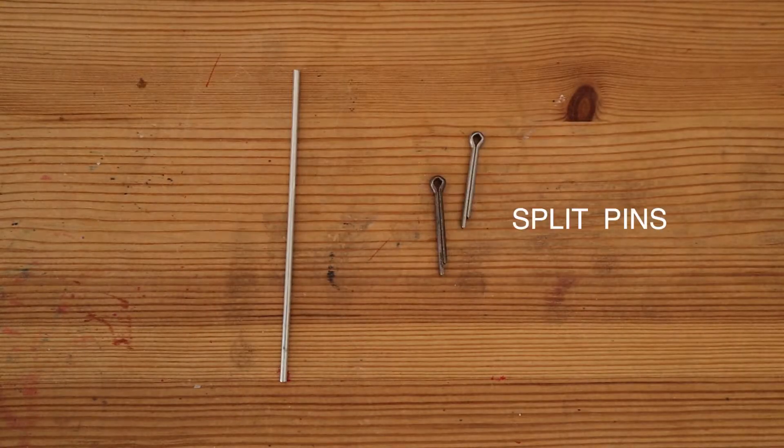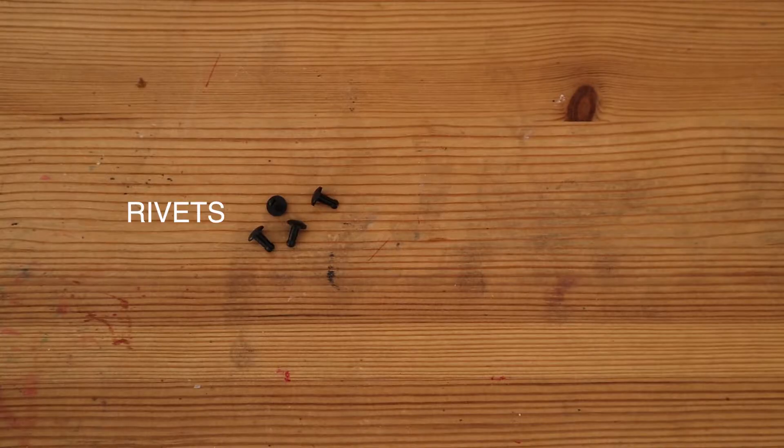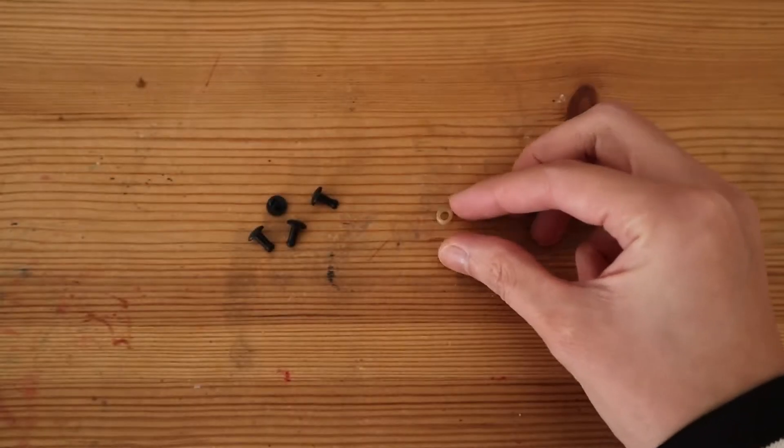You'll also need an axle, two split pins, floor rivets, and a miniature rubber band that can be cut from a small rubber tube.